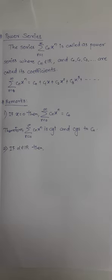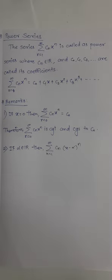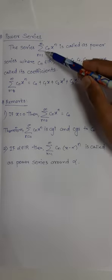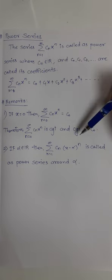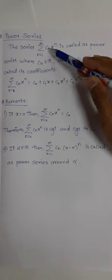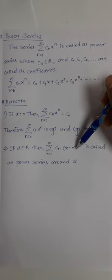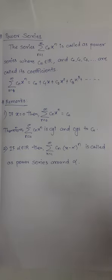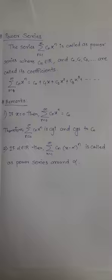The second remark: if alpha is any real number, then the summation cₙ(x − α)ⁿ is known as a power series around alpha. Initially we considered summation cₙxⁿ — if you put alpha equal to zero you get the same series, so that is the power series around zero. When there is some number alpha, we say it is a power series around alpha.